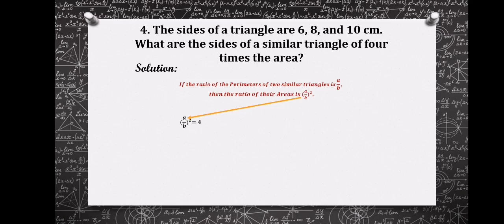Then solving for the value of A over B here, we'll simply eliminate the exponent 2 by getting the square root of 4 which is 2. From here, the ratio of the perimeters of two similar triangles is A over B. Therefore, 2 is the ratio of the perimeters of the two given triangles.